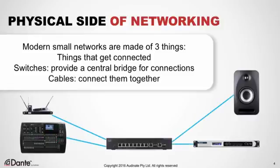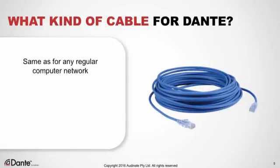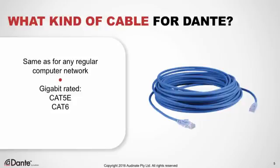And then finally, the cables that connect them. What kind of cable is used for Dante? The answer is the same cable that you'd use for any network. Audio traffic isn't special — it's just data. Since gigabit network speeds are recommended for Dante, that means using Cat5e or Cat6 cable. Cat6 is rated for greater noise resistance in electrically noisy environments, but Cat5e will work just fine in the vast majority of situations and is the most commonly used. All copper ethernet cables are limited to runs of 100 meters or less between switches or devices.